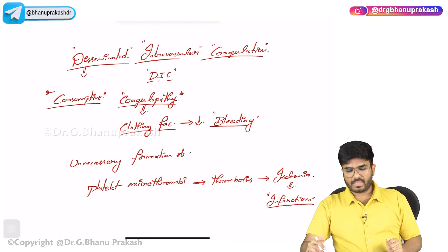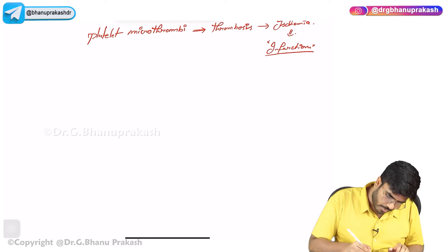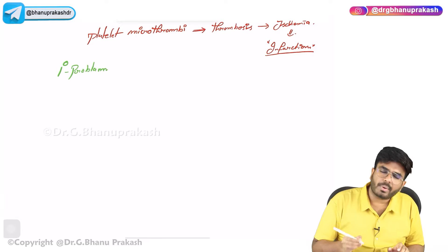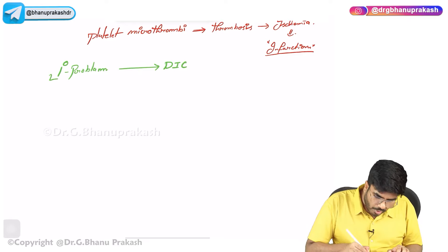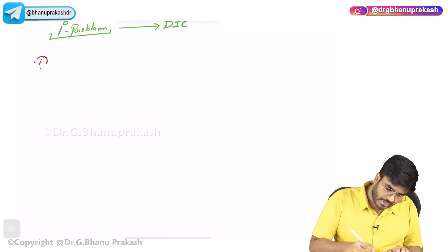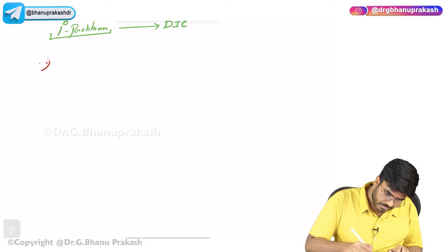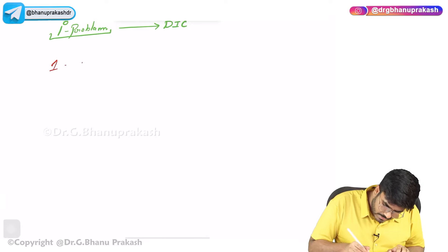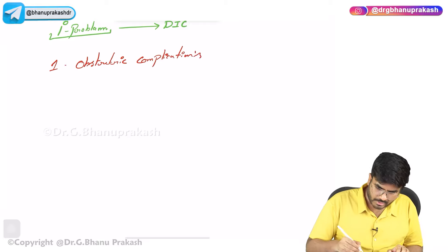Why DIC? DIC is a complication — there is actually a primary problem that you need to address. In which conditions can you have disseminated intravascular coagulation? Problem number one is obstetric complications.